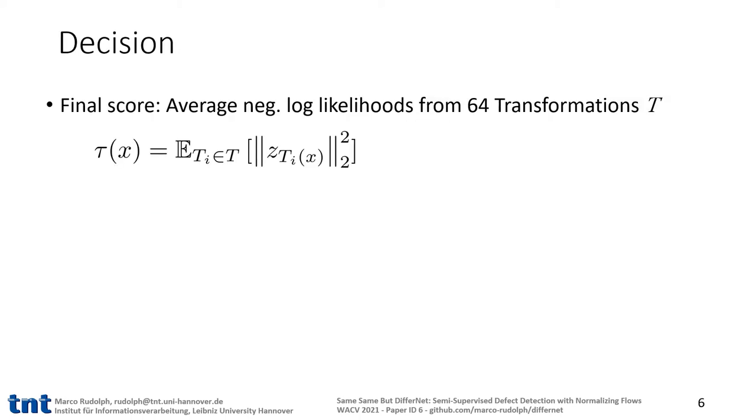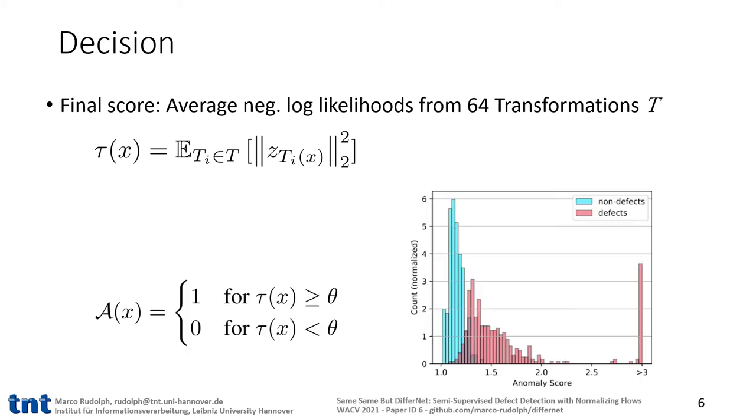To judge whether a sample is defective or not, we define a score which is based on the negative log likelihood of the latent vector z. In our case of a Gaussian distribution, this is equivalent to just using the L2 norm of z. To have a robust score, we average this negative log likelihood of 64 transformed images. The final decision can be made by simple thresholding, where a high score indicates a defect. In practice, this threshold can be set according to a desired false positive rate.